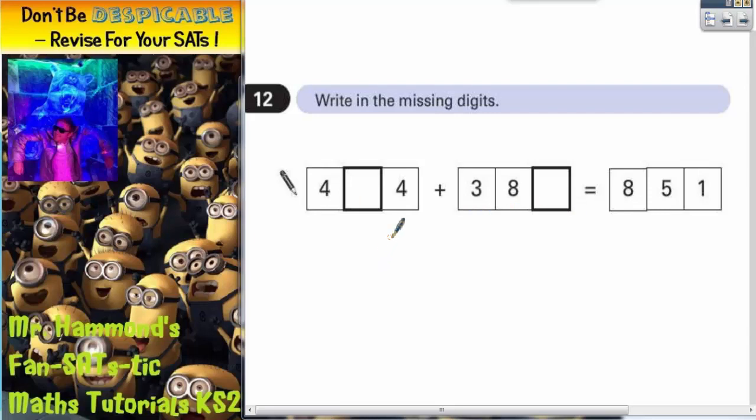So the first thing we're going to do is set it out in the column method like we would normally do. So we've got four hundred, some amount of tens and four, plus three hundred and eighty, and then some amount of units. And we know that the answer is 851.